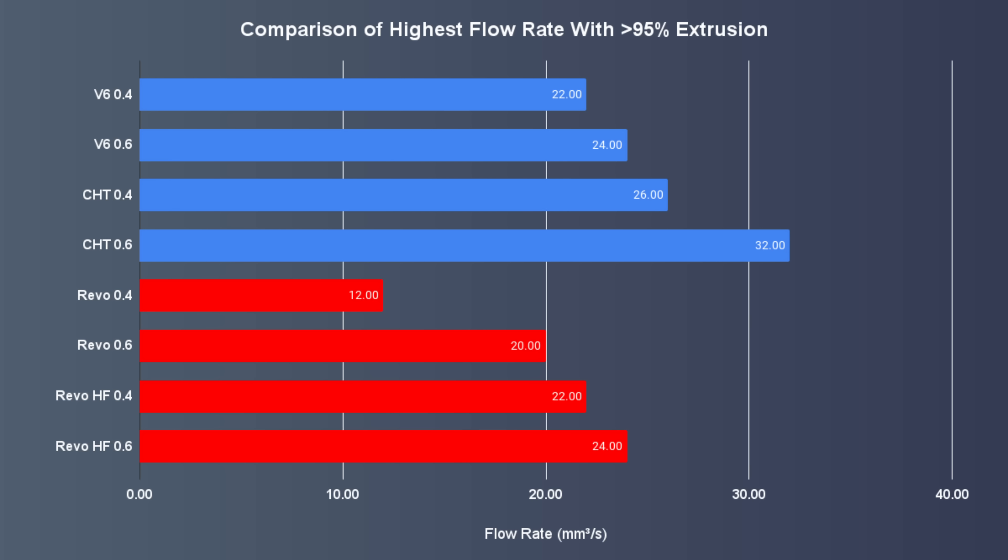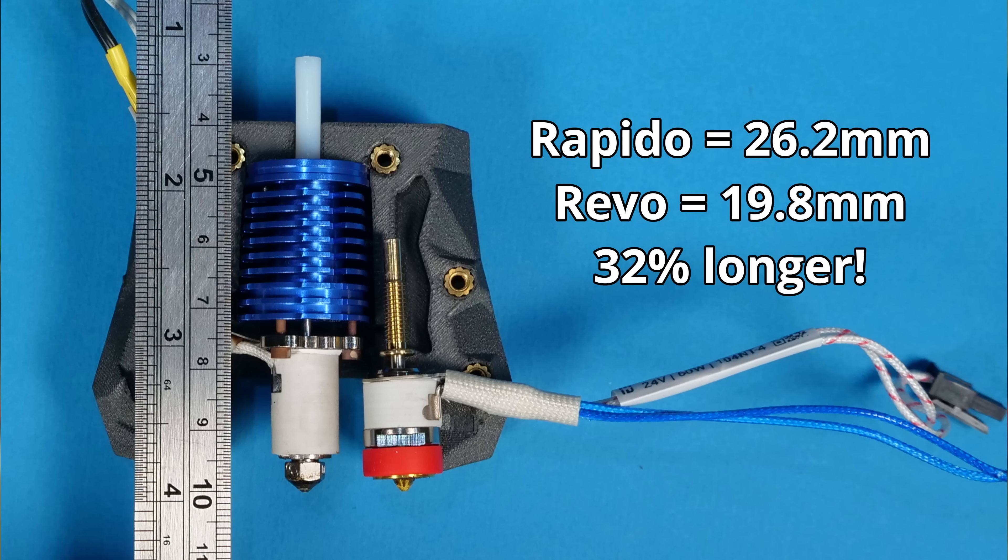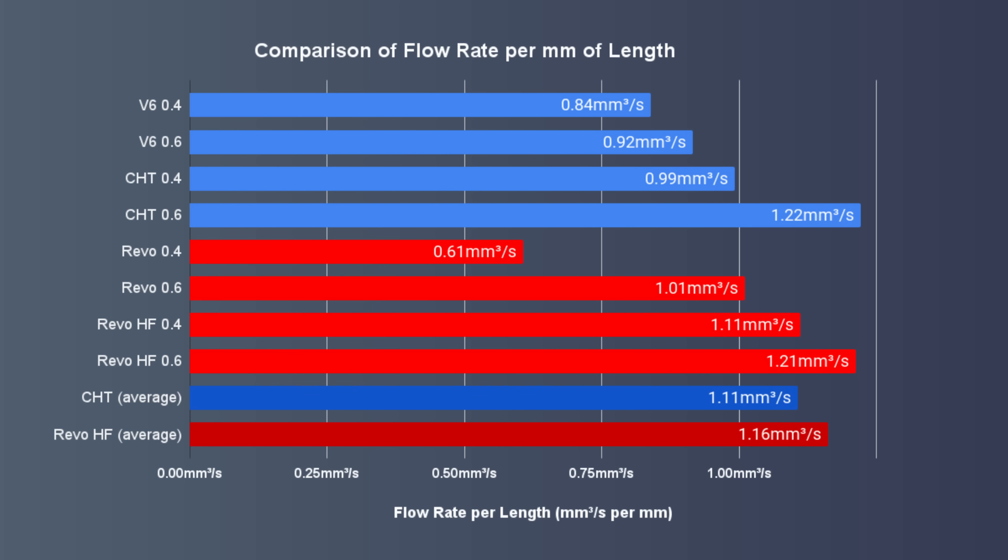You can see that across the board at equivalent orifice diameter and flow technology the Rapido consistently outperforms the Revo equivalent by 20-80%. That's quite a big deal and as far as I can tell the only real reason for this is that the melt zone on the Rapido is a little bit longer. In fact if we compare the performance for each hotend per unit length of the melt zone we can see the results are much more even with Revo actually pulling ahead in many cases.